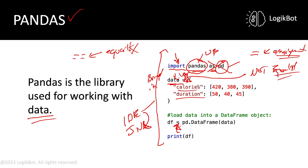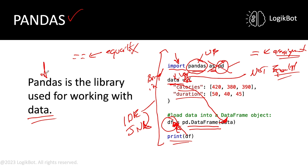We're going to use 'df' as an alias for data frame, and we're going to load our data into a data frame. A data frame is a Pandas object. With the last line of code, we're going to print that data frame we just loaded our data into so we can see it. Pandas is our library for working with data — you'll use it all the time.